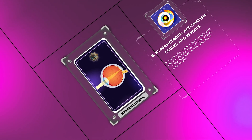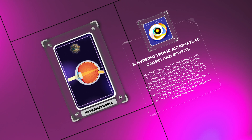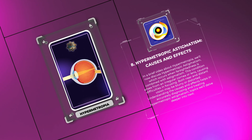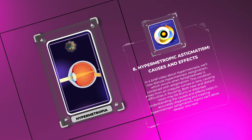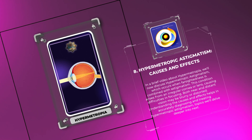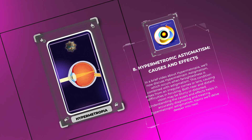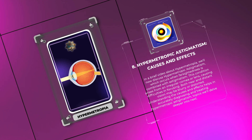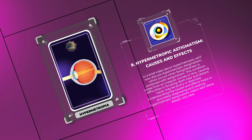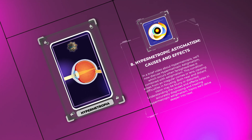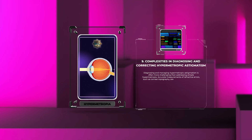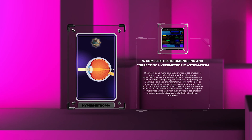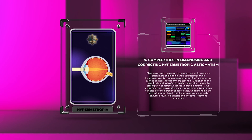We'll now discuss hypermetropic astigmatism, which occurs when farsightedness is combined with astigmatism. This condition arises from an irregular cornea or lens, causing difficulties in focusing — both near and distant vision may be blurry or distorted. Understanding the causes and effects helps in accurately diagnosing and treating hypermetropic astigmatism. Diagnosing and managing it is often more challenging than addressing simple hypermetropia, requiring accurate measurements of refractive errors such as corneal topography.